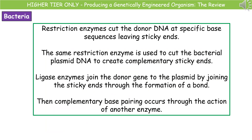There are two key enzymes to remember when producing genetically engineered organisms. First, restriction enzymes — these cut the donor DNA at specific base sequences to create sticky ends, and we use the same restriction enzyme to cut the bacterial plasmid to create complementary sticky ends, so we must use the identical restriction enzyme in both cases. Second, the ligase enzyme — that joins the sticky ends by forming a bond between them.